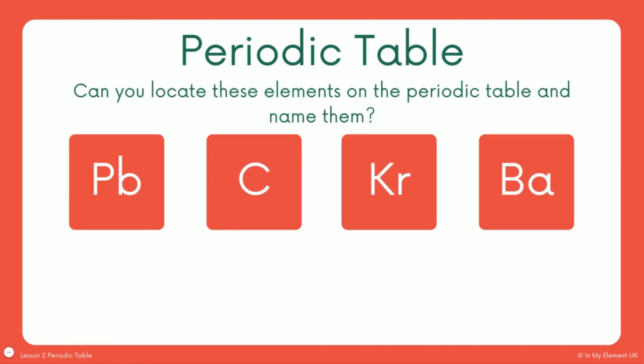I've got four elements. You should be able to access a periodic table. If you can open one on your Internet browser now while we're doing this, do. If you've got one in a revision guide next to you, do. If you're watching this while you've got your worksheet out, then have a look at that as well. I want you to have a look for Pb, C, Kr and Ba. And I want you to say where they are, if they're in a particular group or whether they're a metal or a non-metal and their name.